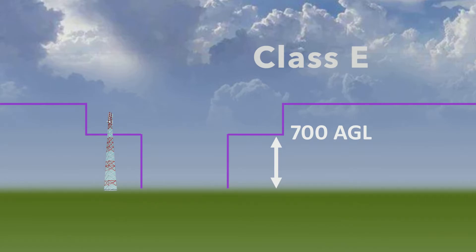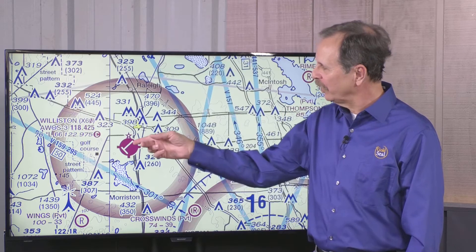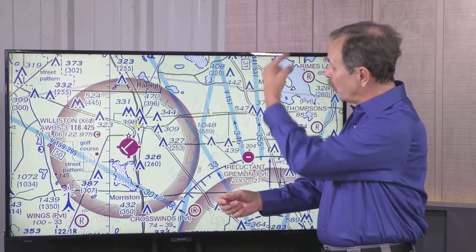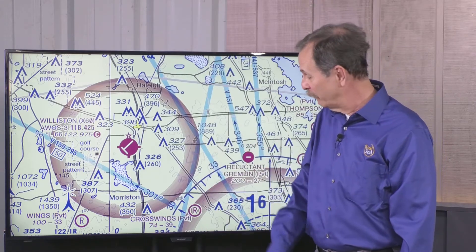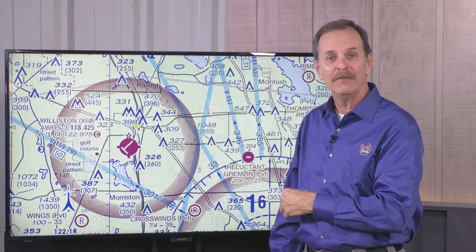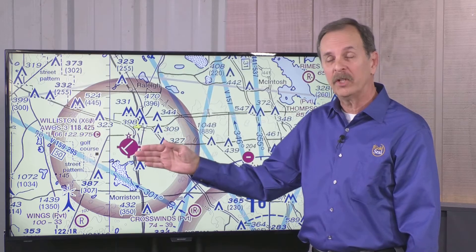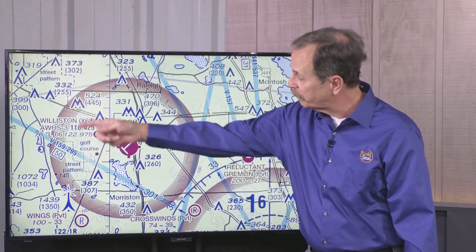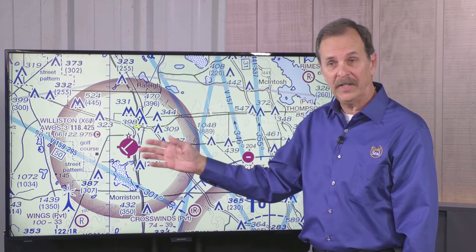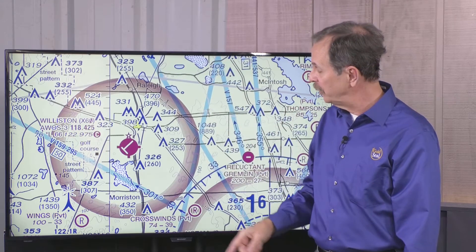Let's take a look at a case study involving a tower near the Williston Airport in Central Florida. Here we've got a blow-up of the Central Florida sectional. We have the Williston Airport right here — Gainesville, Florida is to the northeast, and Ocala is down this way. The Williston Airport is Class G. The Class G goes from the surface up to 700 feet where it becomes Class E. We know this because of the shaded magenta outline around the airspace, which lets us know that Class E starts at 700 feet. Outside of that outline, we have Class E starting at 1,200 feet.